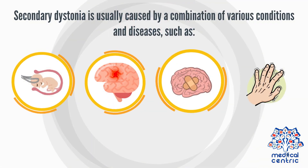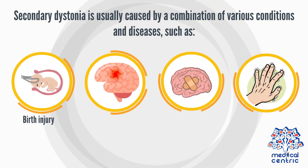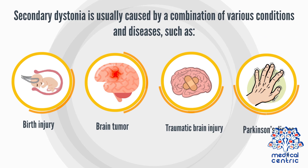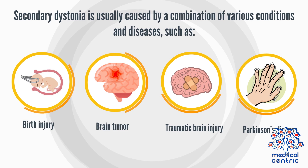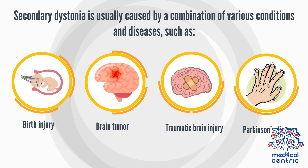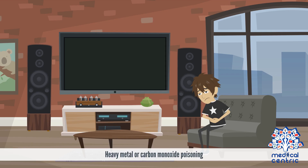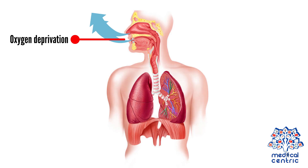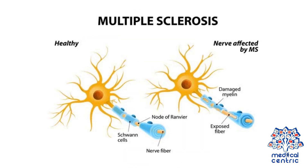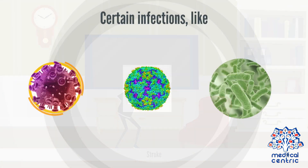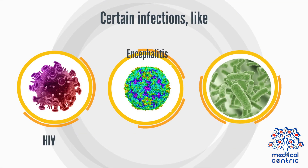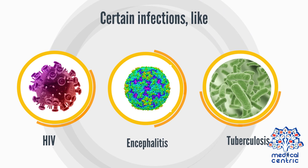Secondary dystonia is usually caused by a combination of various conditions and diseases, such as birth injury, brain tumor, traumatic brain injury, Parkinson's disease, heavy metal or carbon monoxide poisoning, oxygen deprivation, multiple sclerosis, stroke, and certain infections like HIV, encephalitis, and tuberculosis.